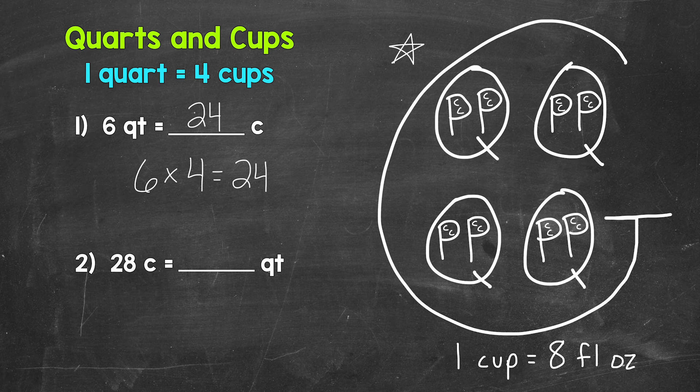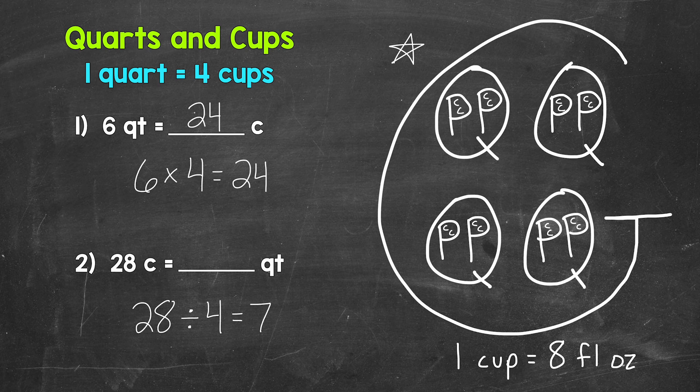Let's move on to number two, where we have 28 cups equals how many quarts. Each group of four cups equals a quart, so how many groups of four cups are in 28 cups? We need to divide — 28 divided by four. When we convert cups to quarts, we divide by four. 28 divided by four gives us seven, so 28 cups equals seven quarts. Again, cups to quarts, we divide by four.